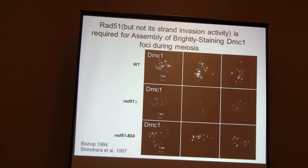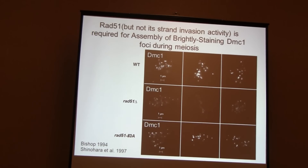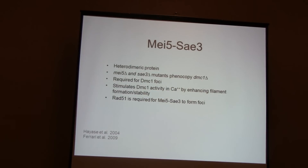Previously I had shown that in a Rad51 mutant, DMC1 foci don't form normally — they're relatively faintly staining. This isn't an antibody issue; there's simply less DMC1 signal in a Rad51 mutant than in wild type. However, in the 23a mutant, DMC1 forms foci of normal staining intensity. This gives us a hint about how Rad51 is influencing DMC1 — through a mechanism that doesn't require Rad51's strand exchange activity.